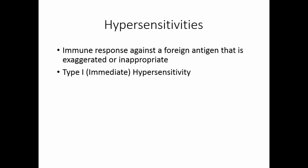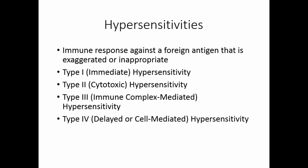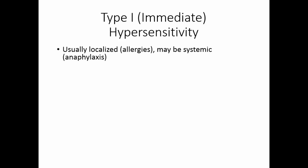Type 1 or immediate hypersensitivity, type 2 or cytotoxic hypersensitivity, type 3 or immune complex-mediated hypersensitivity, and type 4, delayed or cell-mediated hypersensitivity. Type 1 or immediate hypersensitivity is usually localized. These are what we think of as allergies. Occasionally it becomes systemic and this is anaphylaxis.